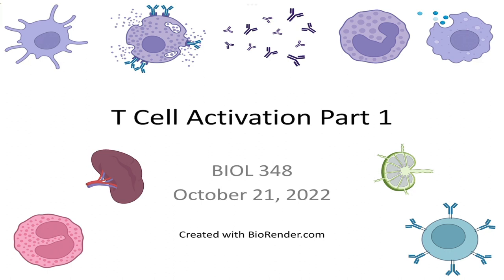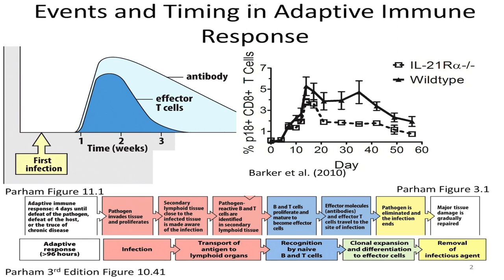Today's topic is another way of thinking about events happening in the early days after the initiation of an adaptive immune response. We're still in this phase between the first infection and when we get a good T-cell response, trying to figure out what events are happening during that time. We've previously talked about how we transport antigen and T-cells to their specific locations; now we need the T-cells to actually recognize the antigen and start to respond.